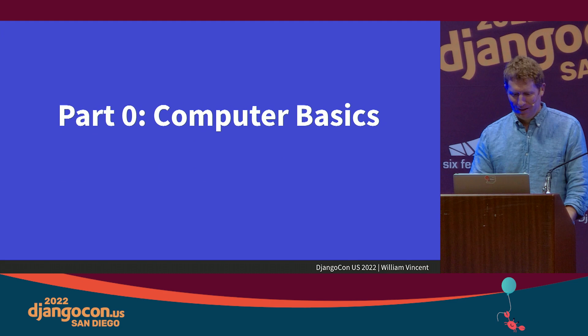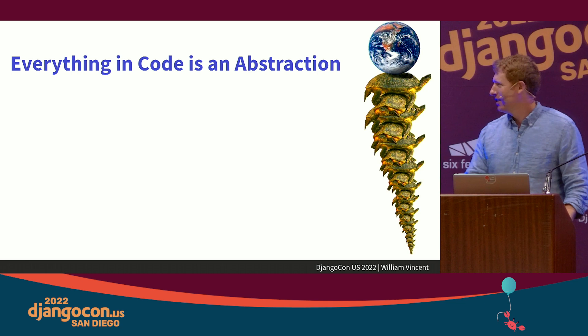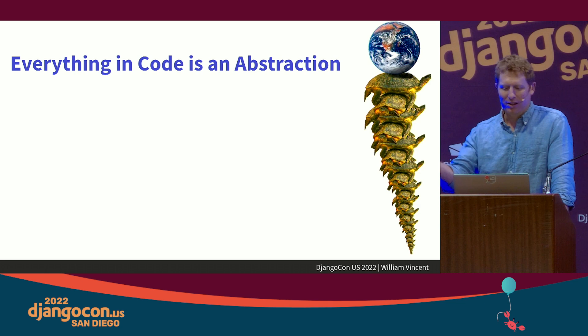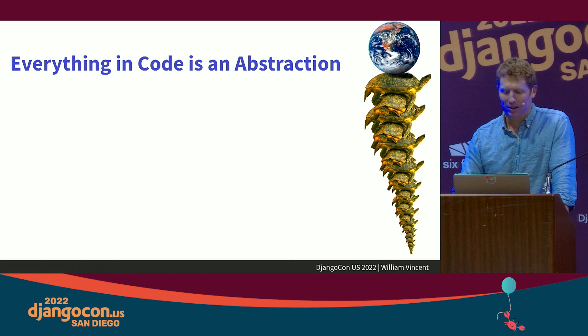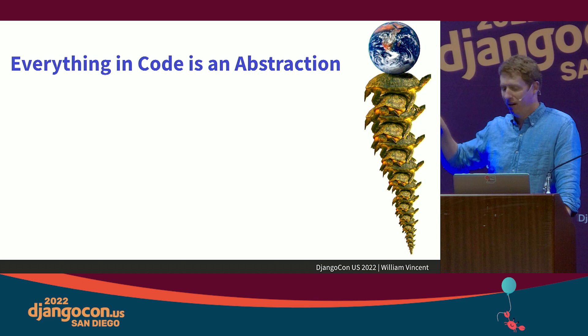Some quick computer basics to set context. Everything is turtles — everything is an abstraction. Programming languages like Python are interpreted languages written in C, sitting atop assembly, ultimately binary code. Nobody knows all of the stack; you just get a sense of it and pick a turtle to focus on. We're going to focus on the web bit. It's okay to feel overwhelmed — the most impressive people I know talk mostly about all the things they don't know.